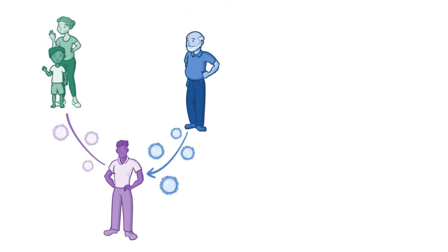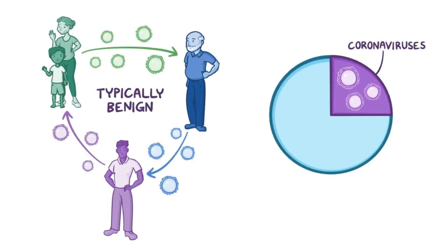Now, coronaviruses that circulate among humans are typically benign and cause about a quarter of all common cold illnesses. In COVID-19, coronaviruses initially circulating among bats, which are a natural animal reservoir, seem to have mutated and ultimately started causing disease in humans.